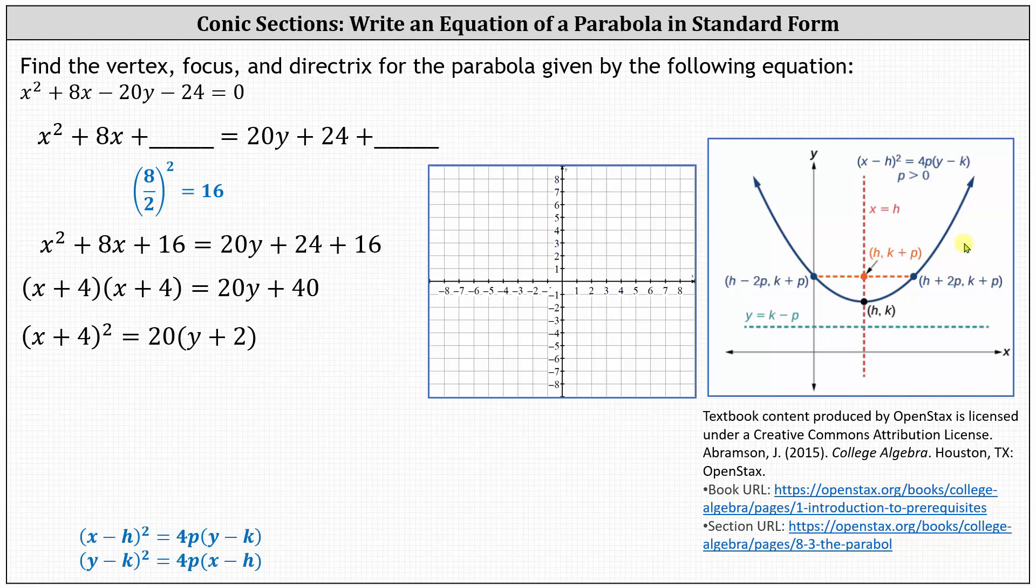Recall the vertex is h comma k, and the absolute value of p will give us a distance from the vertex to the focus, as well as the distance from the vertex to the directrix, this horizontal line here.